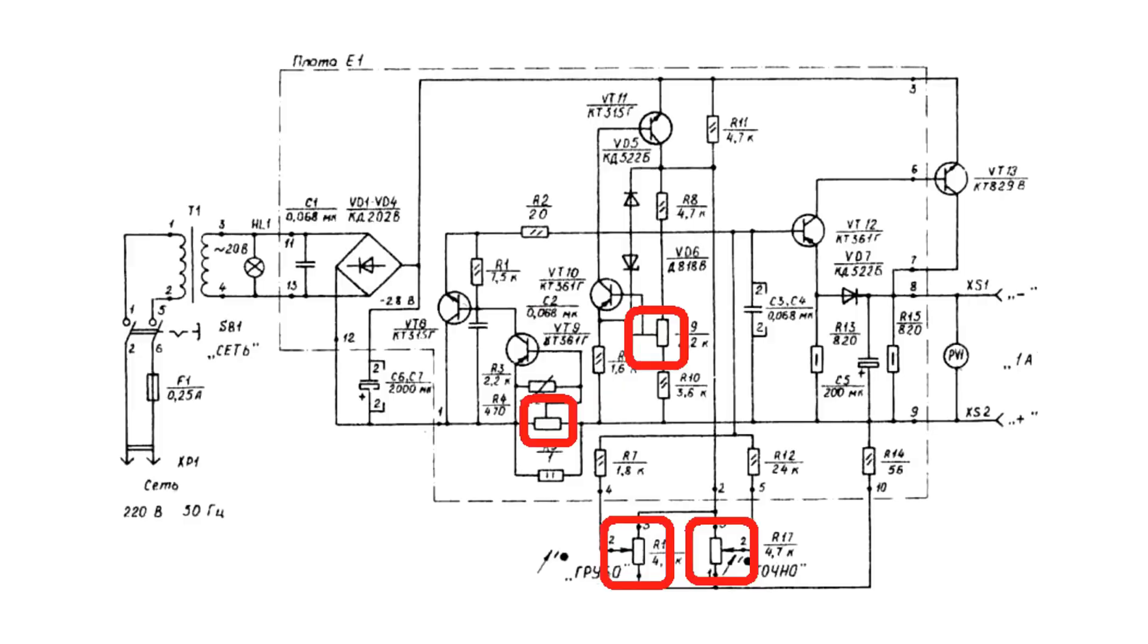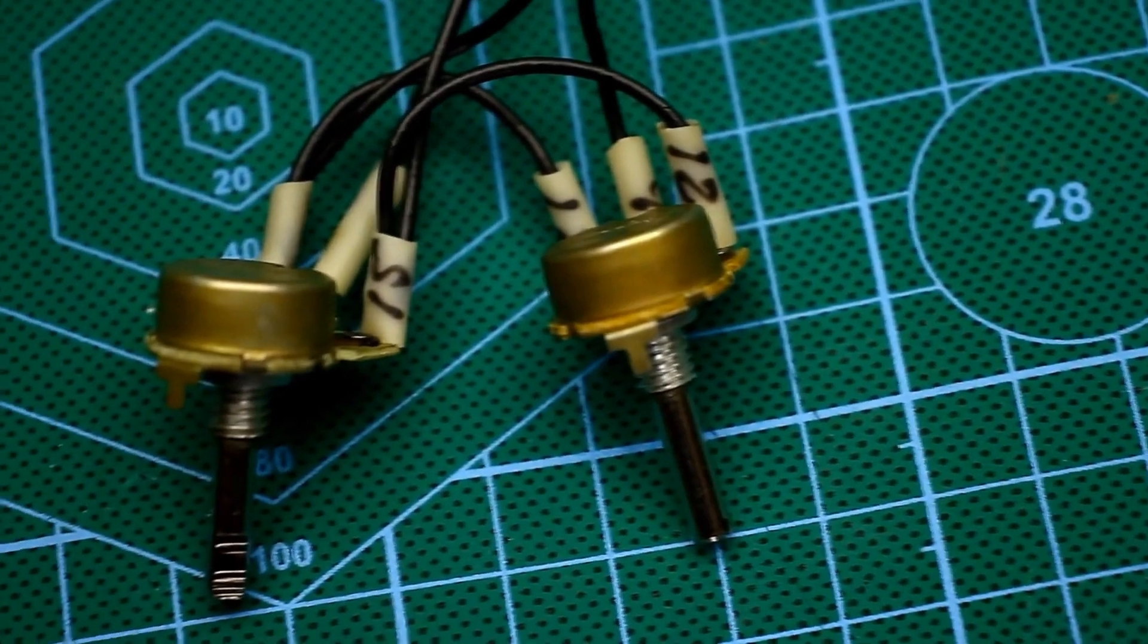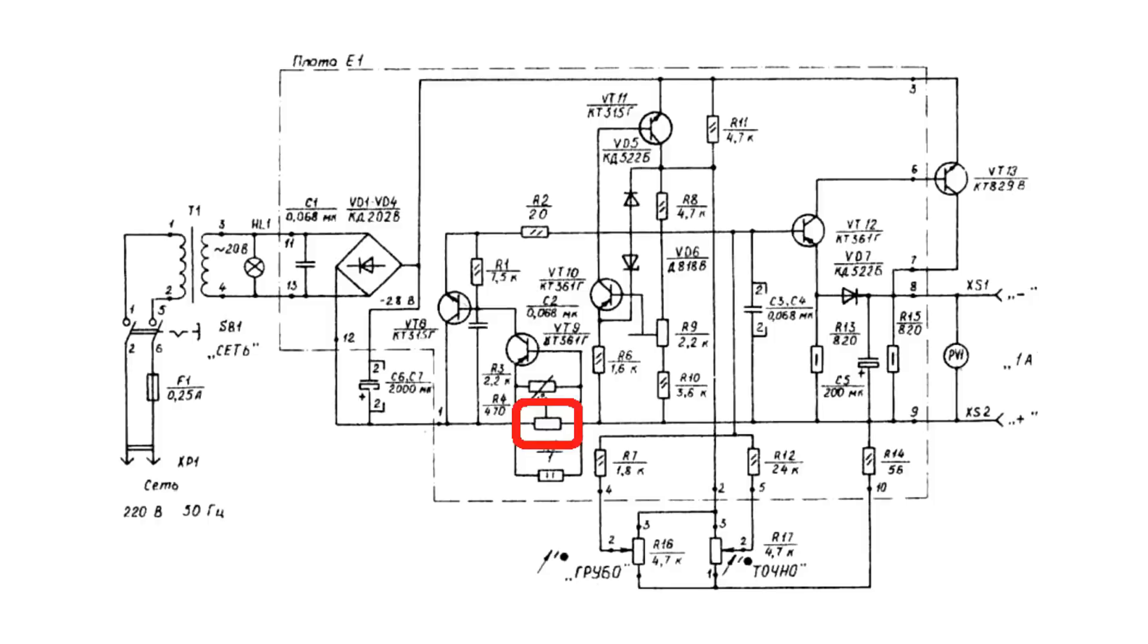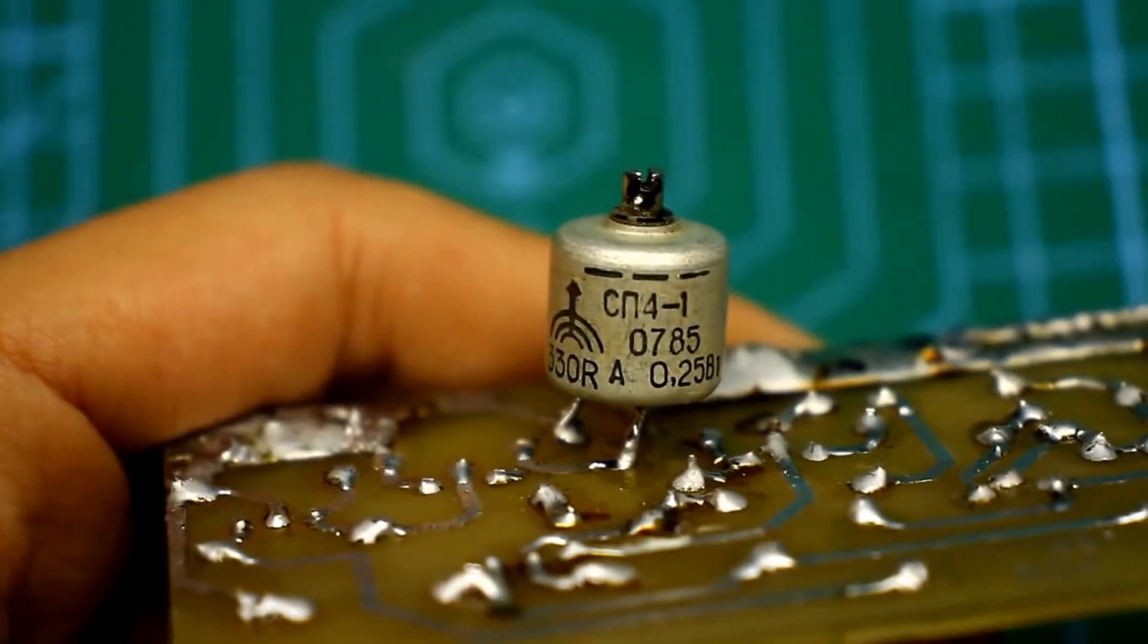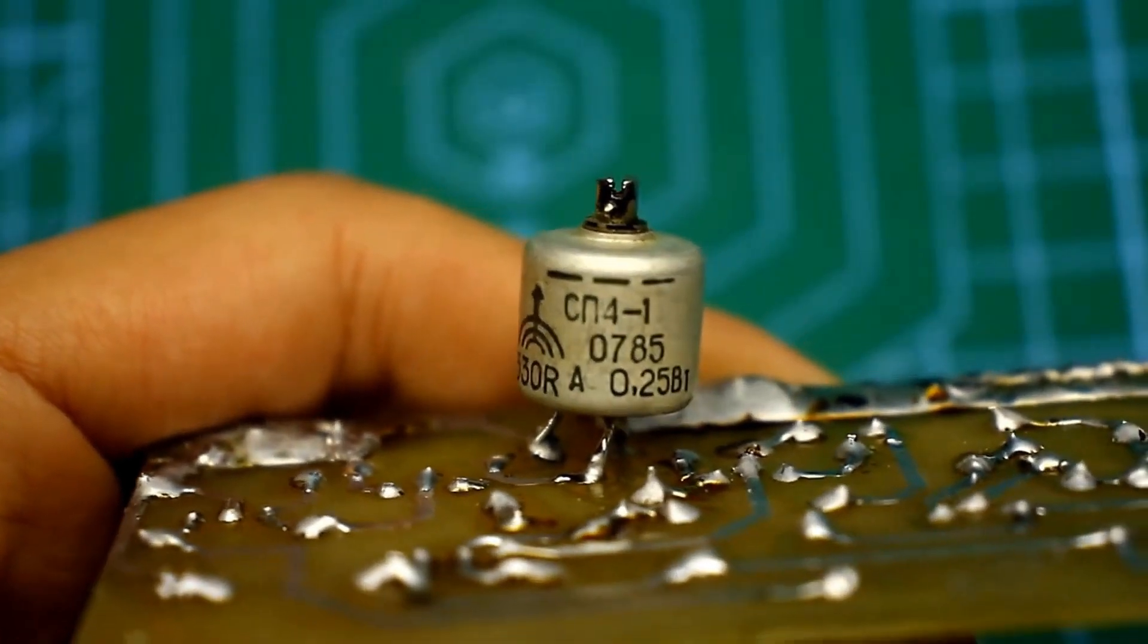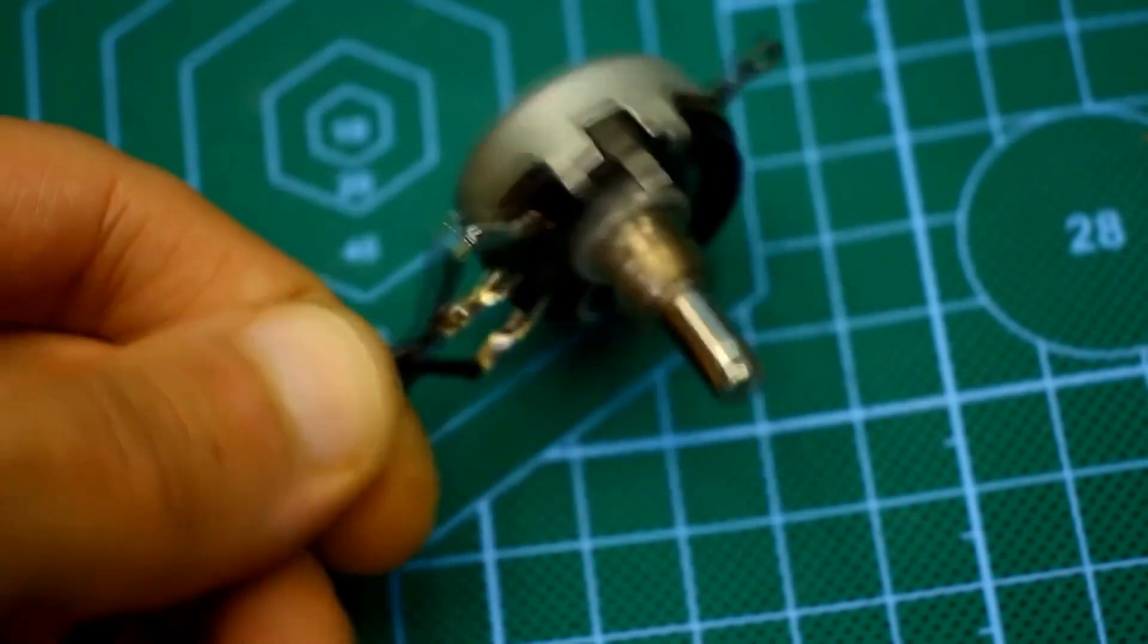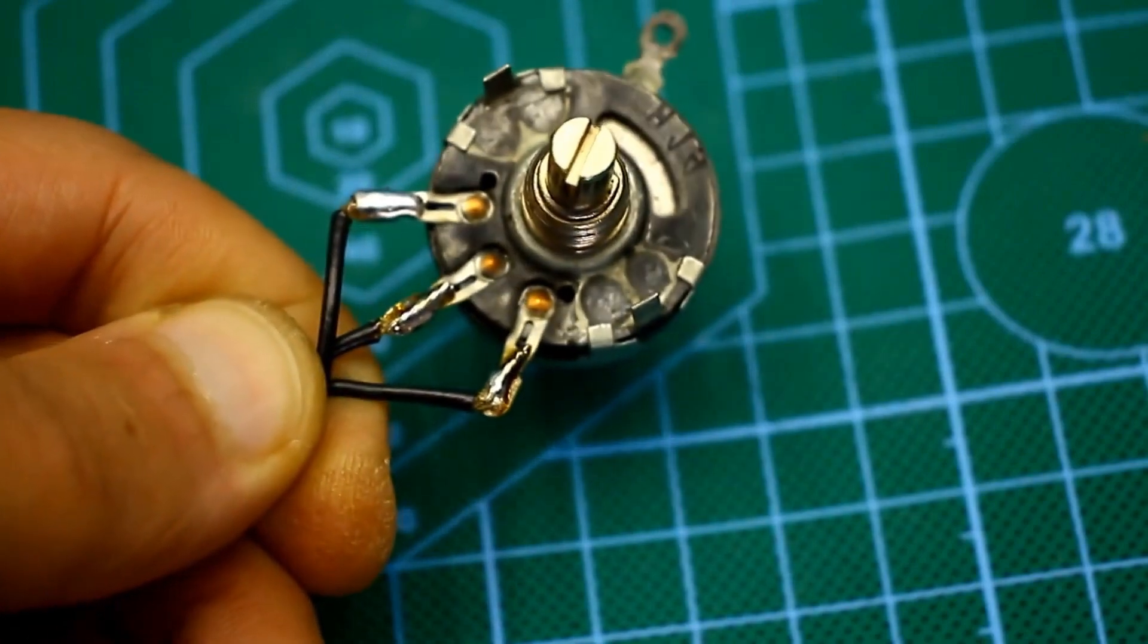We have four variable resistors. Two of them are trimmers. The others are intended for coarse and fine adjustment of the output voltage. The first resistor is responsible for current limiting, a kind of current protection. If desired, this resistor can be brought outside. In that case, the unit will have the capability to limit current.